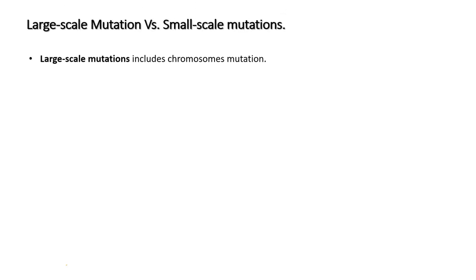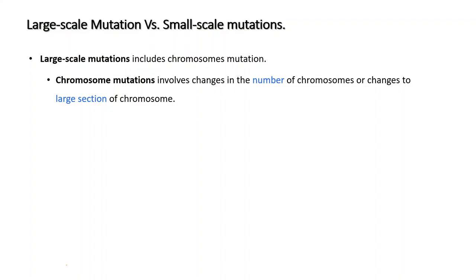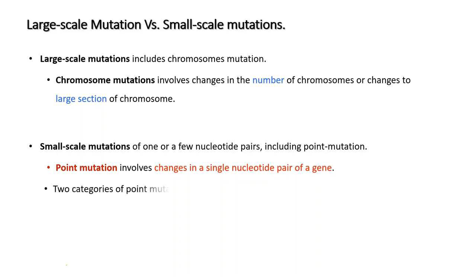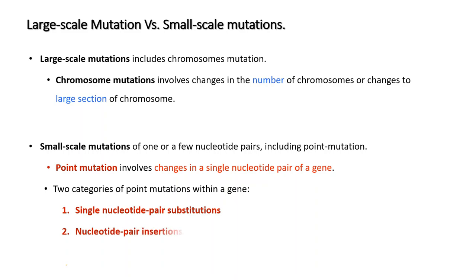Mutations can be classified as large-scale or small-scale. Large-scale mutations include chromosome mutations, which involve changes in the number of chromosomes or changes to large sections of a chromosome. Small-scale mutations affect one or a few nucleotide pairs, including point mutations. Point mutations involve changes in a single nucleotide pair, and fall into two categories: single nucleotide pair substitutions, and nucleotide pair insertions or deletions.